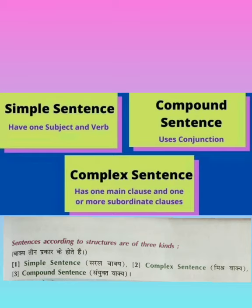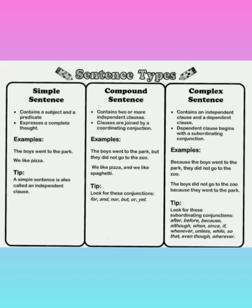Now we will discuss one by one: what is a simple sentence, how we can identify it, and what are its features. Then we will discuss complex sentence and its characteristics and how we can form a complex sentence. And third, what are the features of compound sentence and how we can identify and form it.